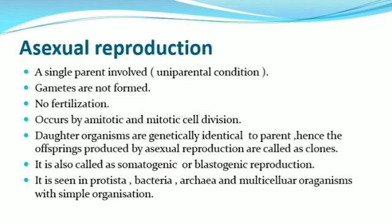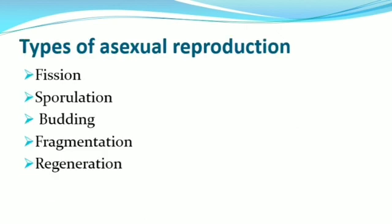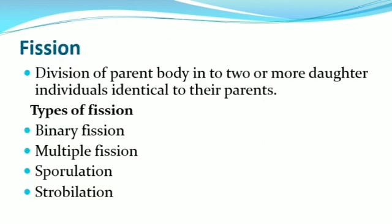Now let us see about the various types of asexual reproduction. They are: fission, sporulation, budding, fragmentation, and regeneration.